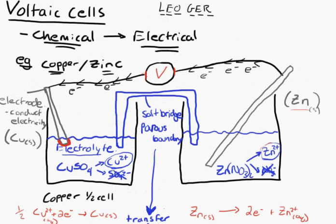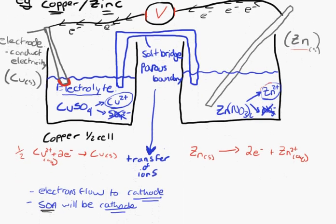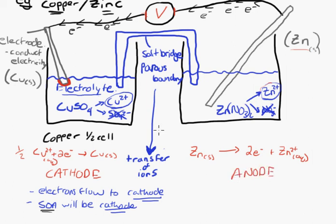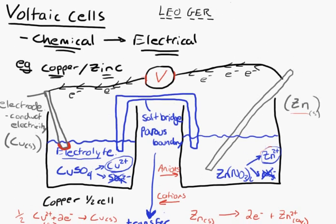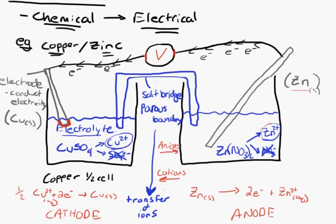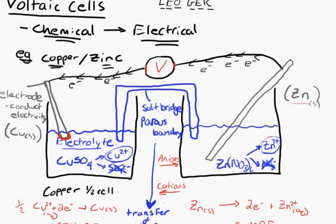That's basically how a voltaic cell works. The transfer of ions through the salt bridge follows a pattern: cations flow towards the cathode, and anions flow towards the anode. That's what completes the circuit. So that's a basic voltaic cell — an example of how we convert chemical energy into electrical energy.